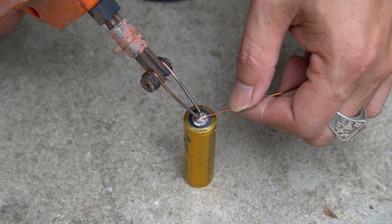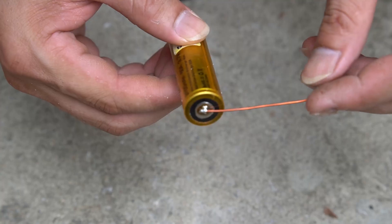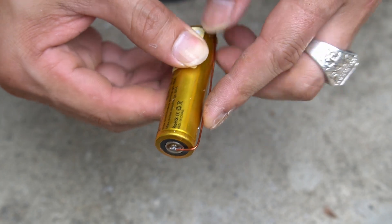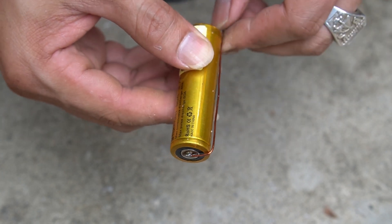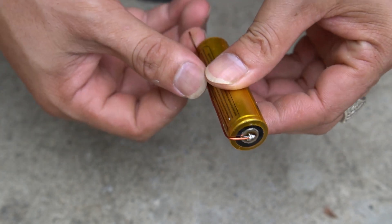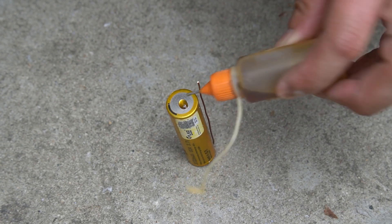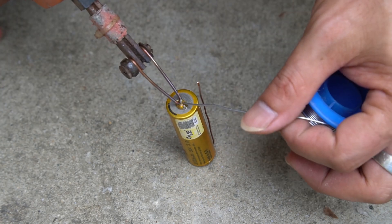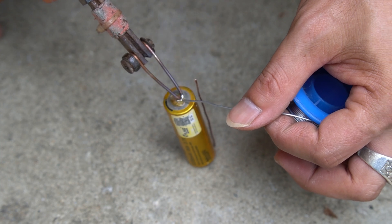Then, using a soldering iron, I connect copper wire to one pole of the battery. Continue to connect another copper wire to the remaining terminal of the battery.